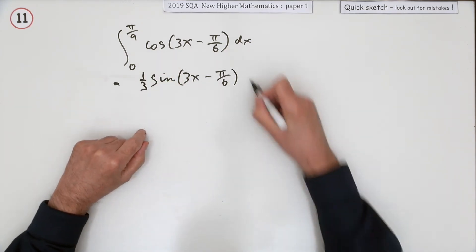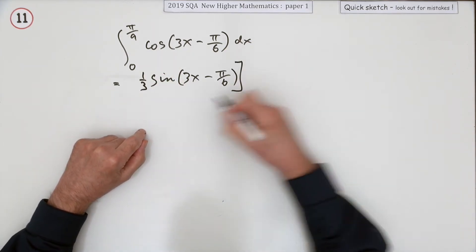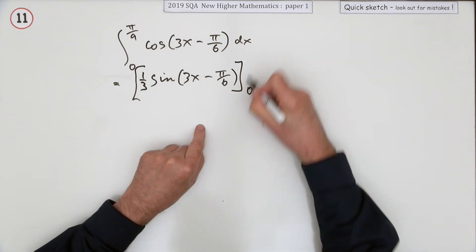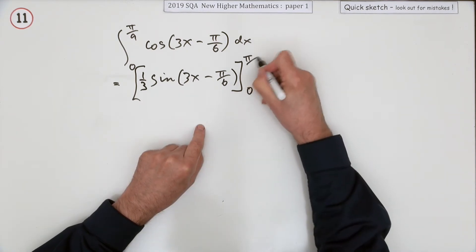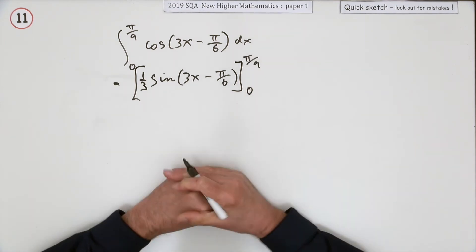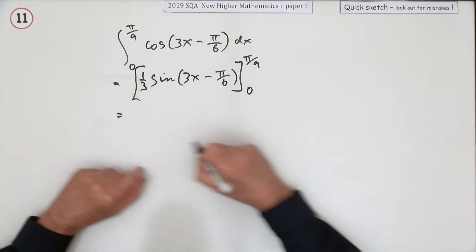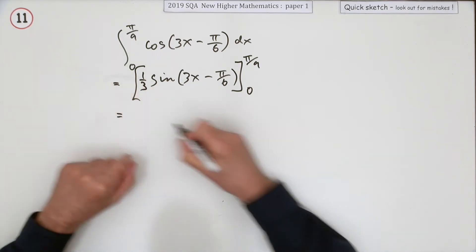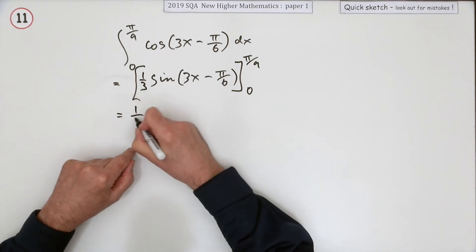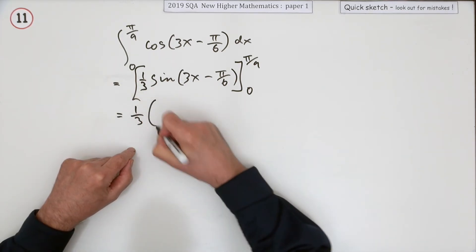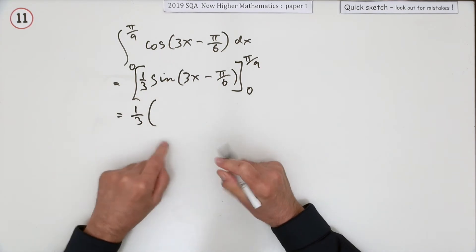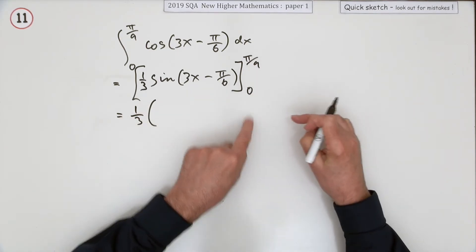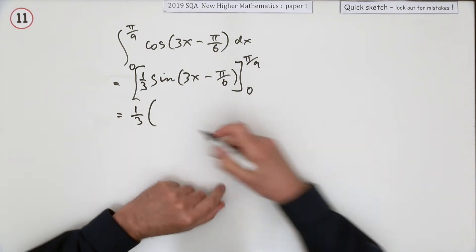That's what you're going to evaluate from 0 to π/9. Notice that third — you could take it out or keep it, but I'm going to take it out, because it's going to be a third of the expression at the upper limit and a third of it at the lower limit.